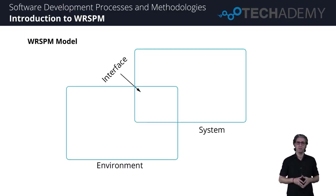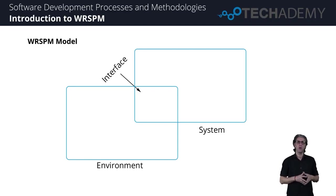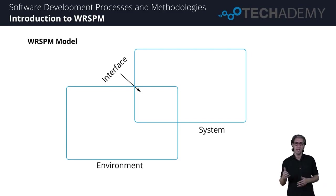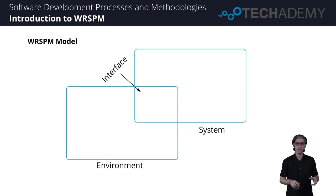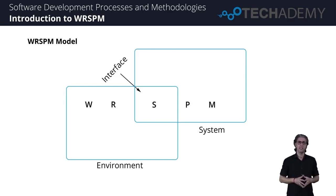To determine the requirement specifications, the WRSPM model can be used. We can see that there is an environment and there is a system. The environment consists of all the user-visible elements of everything in the world, including some part of the system where they overlap — that overlap is what we call the interface. Our system interface is usually a UI or a GUI, which is a graphical user interface. The interface is the location of the meeting between what users can do and what the system can do or display on their commands. There are five different elements present in the WRSPM model.